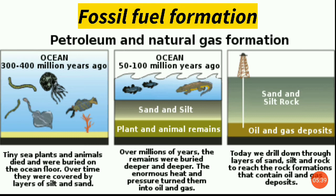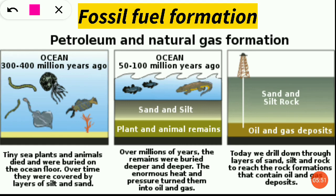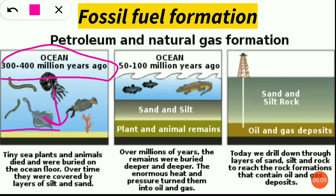Next is fossil fuel. Fossil fuel वो fuel है जो fossil से बनता है। It is formed from the decomposed remains of plants and animals. As you can see in this image, here in the ocean, 300 to 400 million years ago, plants and animals थे। They died and got buried on the oceanic floor.